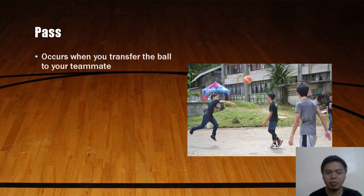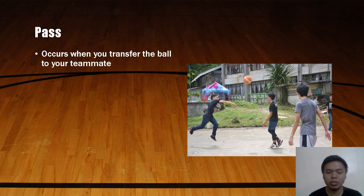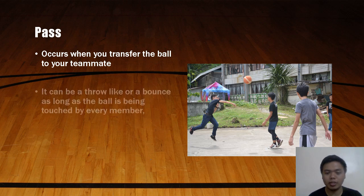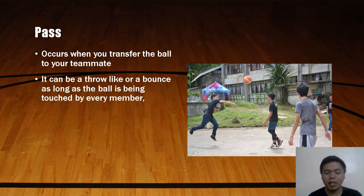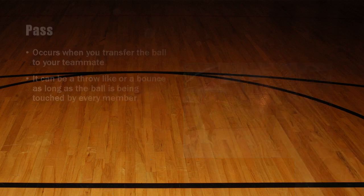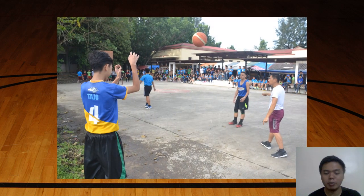Next is Pass. A pass occurs when you transfer the ball to your teammate. It can be a throw or a bounce, as long as the ball is being passed to a teammate. An example of this is a player passing the ball to his teammate.